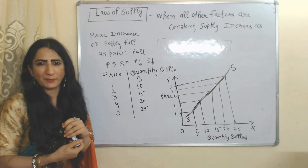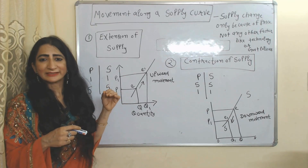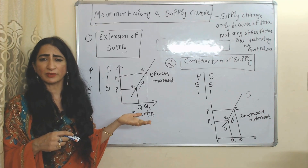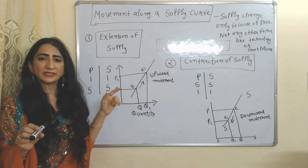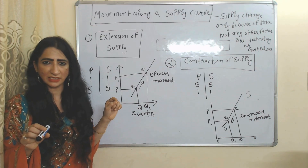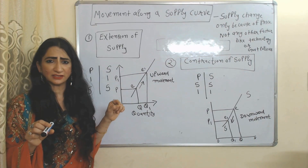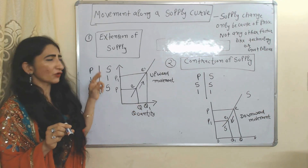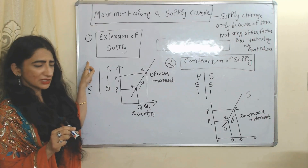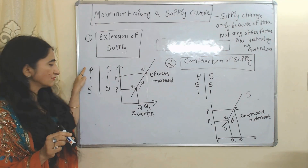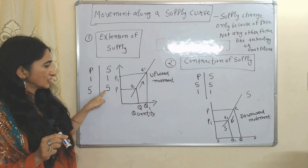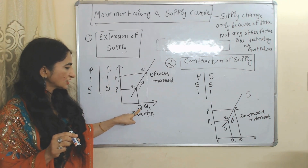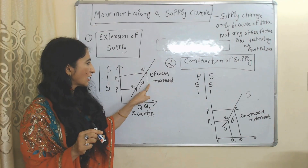Now we will see movement along the supply curve. This means supply changes only because of price, not because of any other factor like government policy or technology. There are two parts: extension in supply and contraction in supply. Extension in supply means as price increases, supply also increases. As you can see in the diagram, as price increases from P2 to P1, supply also increases from Q2 to Q1 — this is called upward movement.